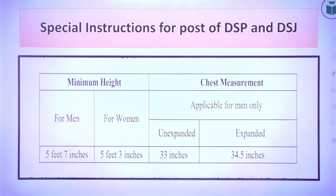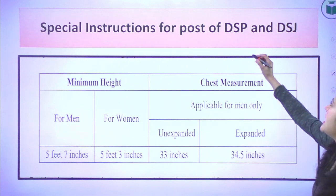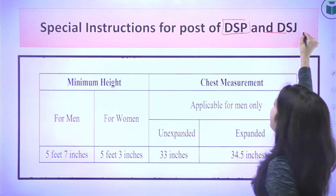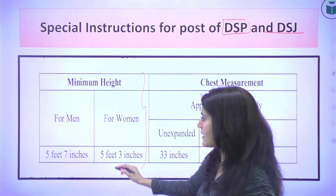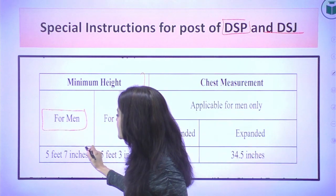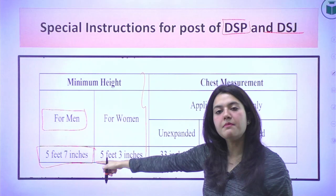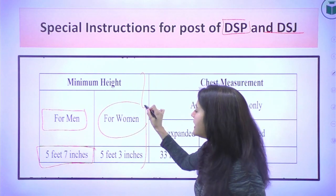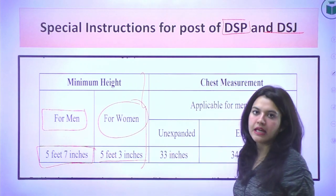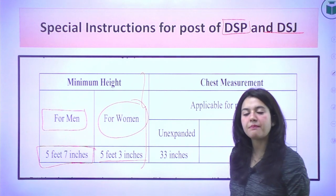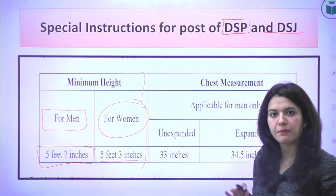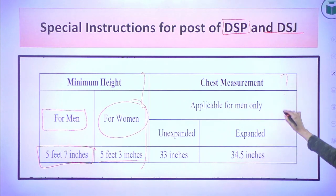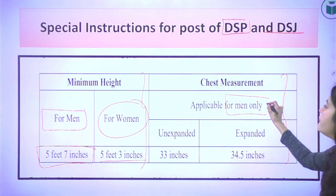There are special instructions for the posts of DSP and DSJ. If you apply for DSP or DSJ, there is a minimum height required. For men, it is 5 feet 7 inches. For women, it is 5 feet 3 inches. There are also chest requirements, applicable for men only.